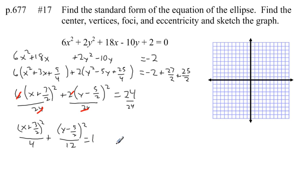Now that we've got it in standard form, we can work on the center, vertices, foci, and eccentricity. First of all, the center. The center is defined by these numbers in parentheses. So my center is at negative 3 halves, comma, 5 halves.